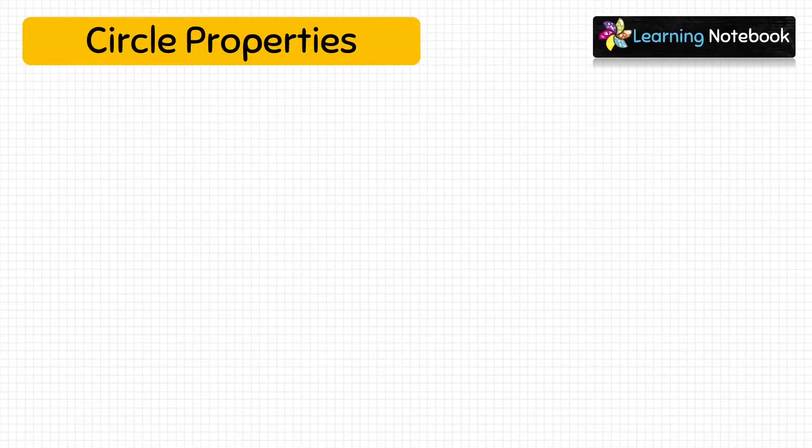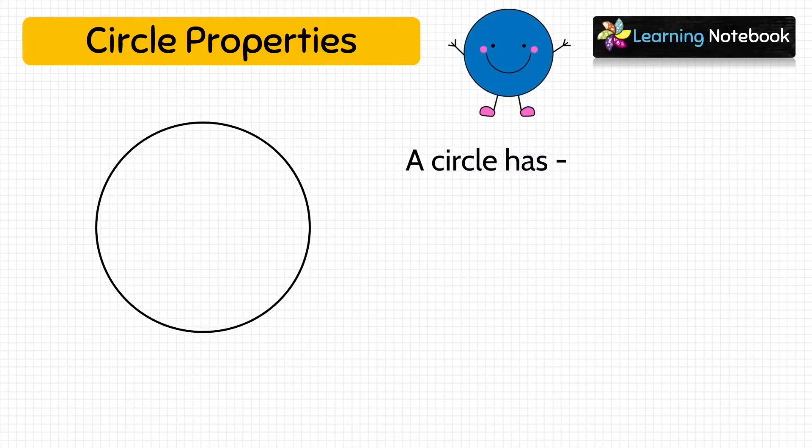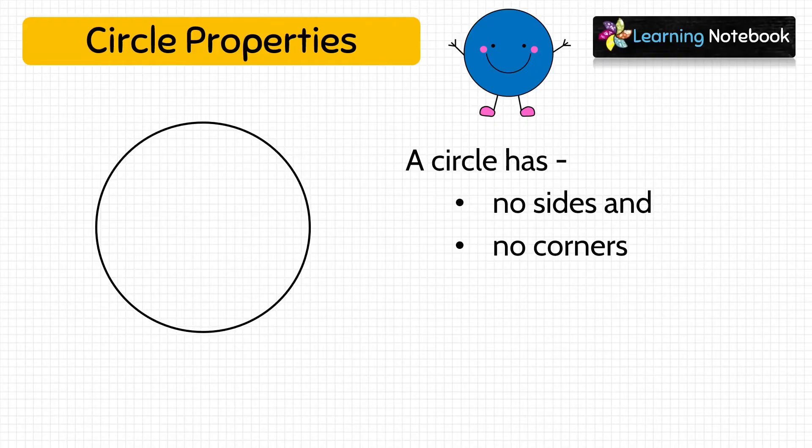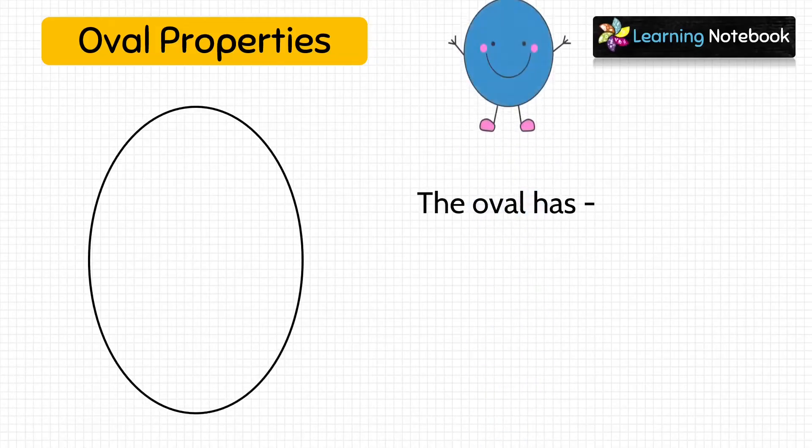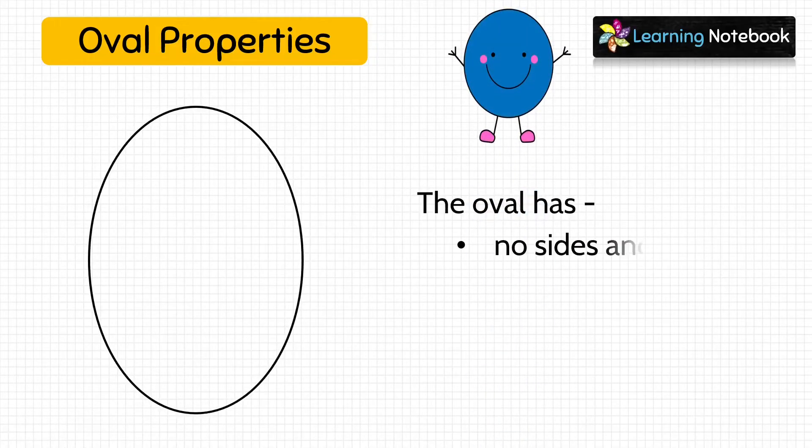And the last basic shape is a circle. A circle has no sides and no corners. Then there is another shape called oval. It is a friend of circle. The oval also has no sides and no corners. A real life example of oval is an egg. So this was all about basic shapes.